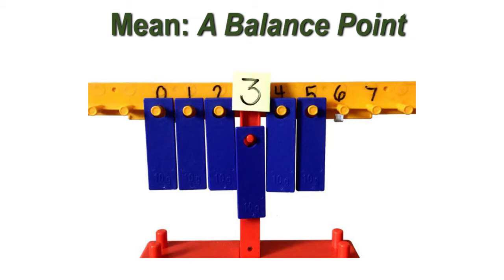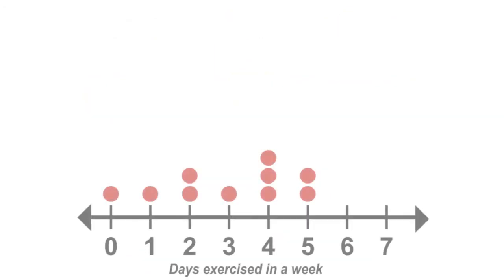In order for an object to be balanced, all of the weight needs to be distributed evenly. Let's show how this works. This line plot represents 10 people and how many days they exercise during a given week.